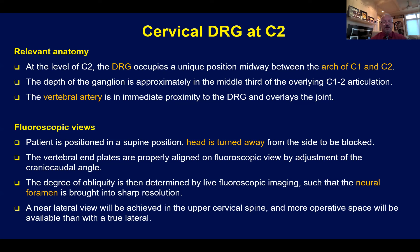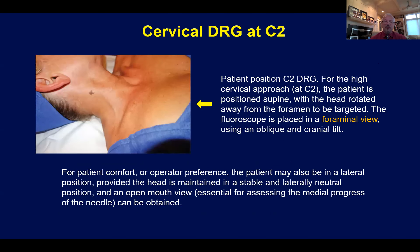Bolsters are used to elevate the shoulder blade on the ipsilateral side. The vertebral end plates can be aligned on fluoroscopy, and the degree of obliquity is then determined by live fluoroscopic imaging such that the neural foramen is brought into sharp resolution. I use magnification times one, though some individuals use magnification times two, which is also acceptable. The patient in this graphic is positioned for a C2 DRG — this is a high cervical approach. The patient is supine with the head rotated away from the foramen as we look for a foraminal view.